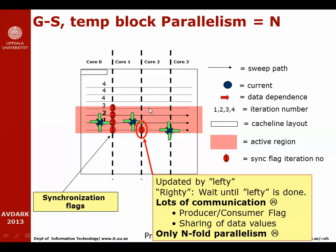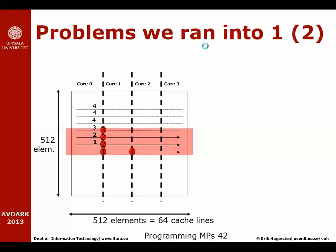That is a lot of communication and not great parallelism. This was the theory. When we implemented it, we ran into quite a lot of problems. In theory this would work and scale up to some small number of cores, but when we implemented this we encountered one major and two minor problems. The major problem was the fact that the size of this matrix was a very nice power-of-two size. In the real world it was actually a three-dimensional problem, but for the sake of this discussion let's assume we have a 512 by 512 element matrix — so 64 cache lines in each dimension and 512 rows.